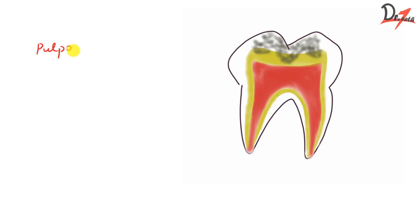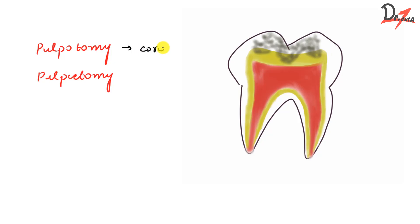We have two terms — pulpotomy and pulpectomy. Pulpotomy is the removal of the coronal portion of the pulp. In pulpectomy, we remove — or we intend to remove — the entire pulp, that is the coronal plus the radicular portion.